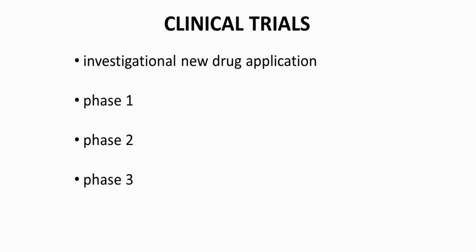To test a lead in humans, a drug company must submit an Investigational New Drug Application, or IND, with the Food and Drug Administration. The IND application details the lead's preclinical data, including evidence of efficacy, completed toxicology tests in animals, and manufacturing information. If the FDA does not raise objections within 30 days, then the company will initiate clinical trials. Clinical trials are safety and efficacy tests performed in humans.